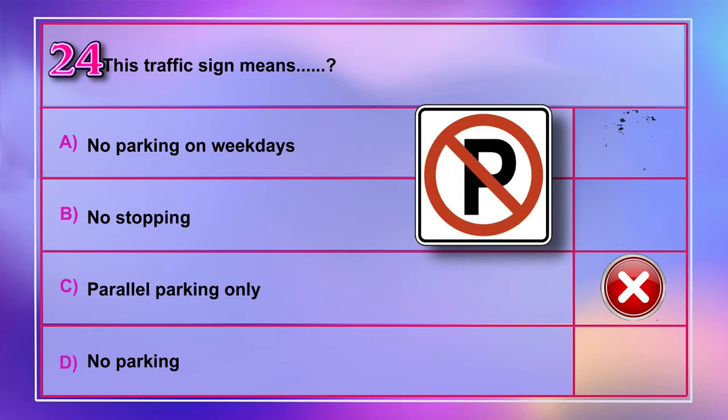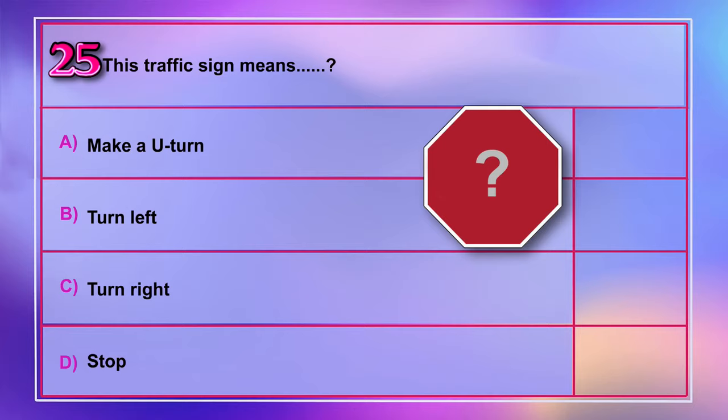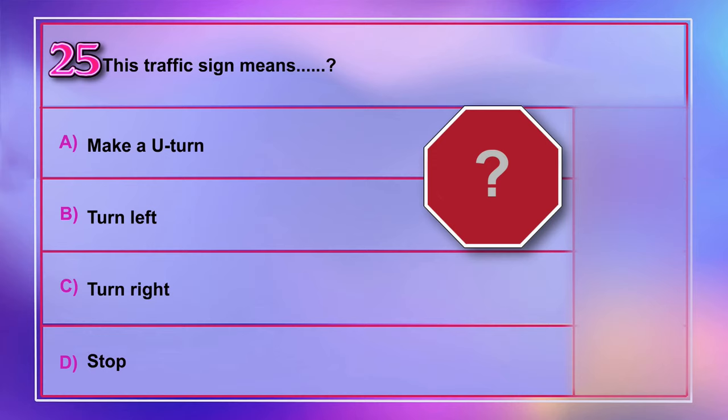Question number 25: This traffic sign means A) make a U-turn, B) turn left, C) turn right, D) stop. Correct answer is D: stop.